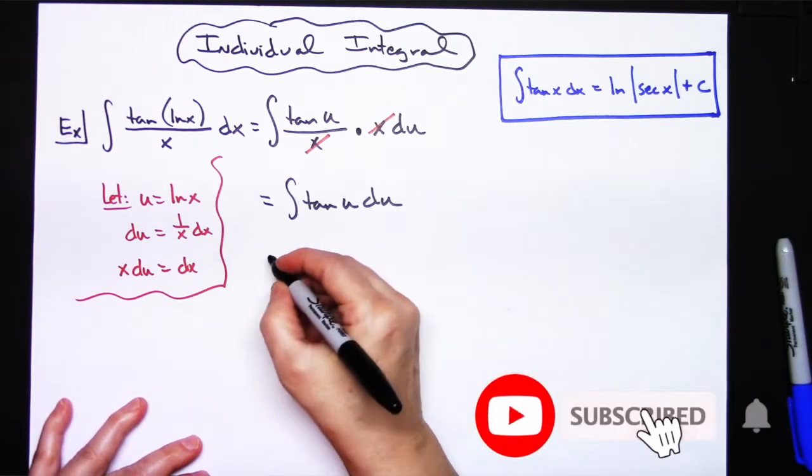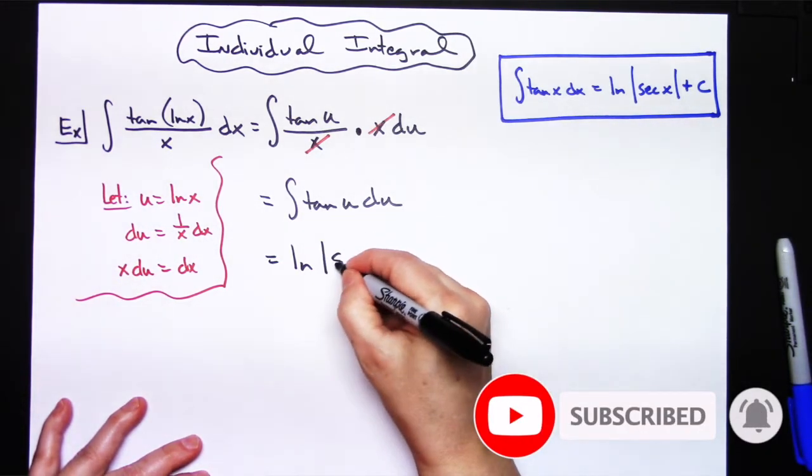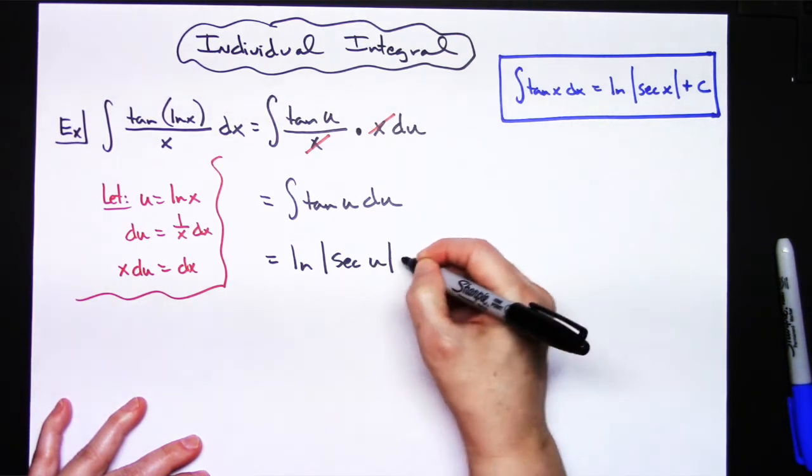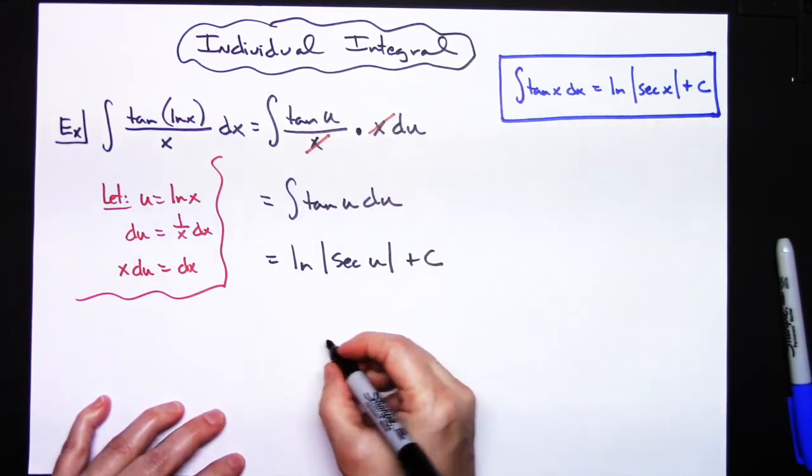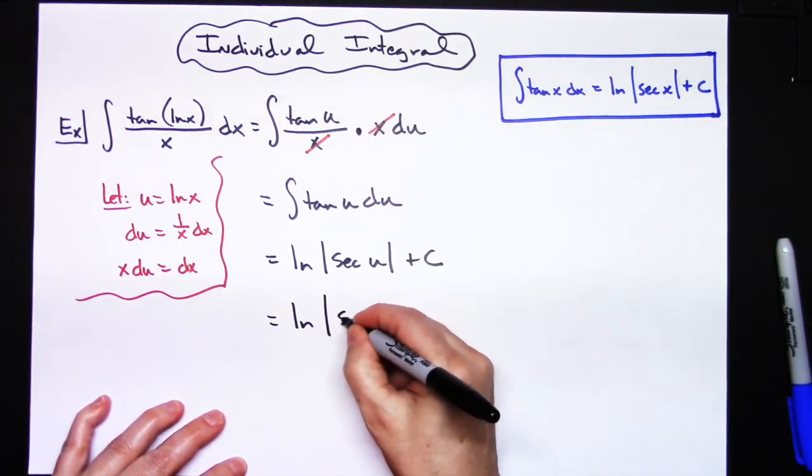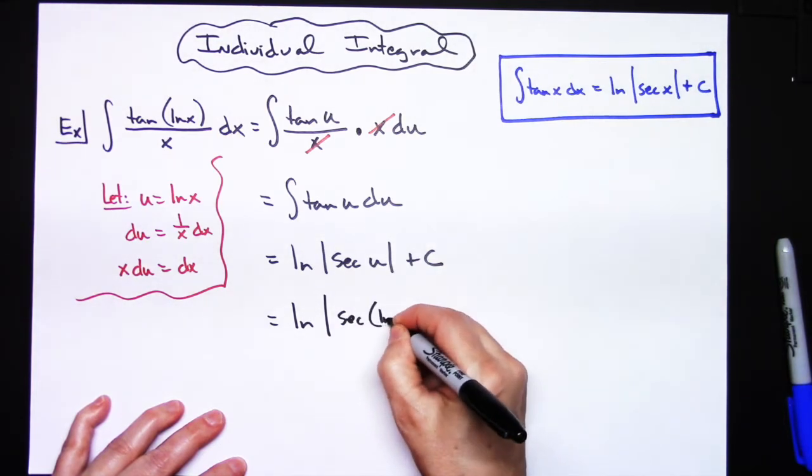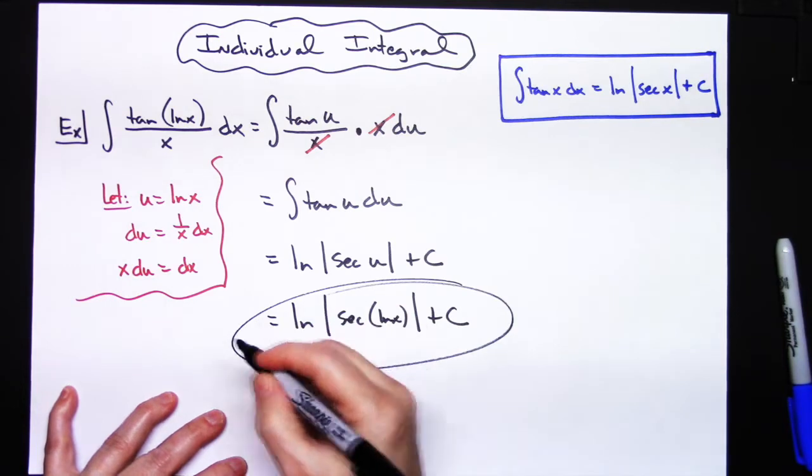I know it's going to be the natural log absolute value of secant u plus C, and I can replace my u with natural log of x. So then I'm going to have natural log absolute value secant of that natural log of x absolute value plus C.